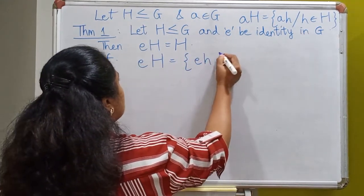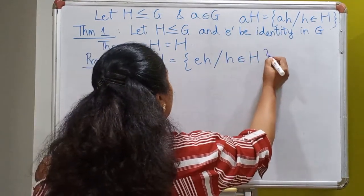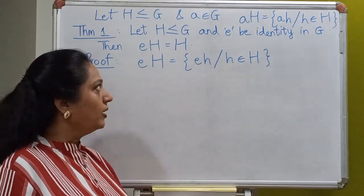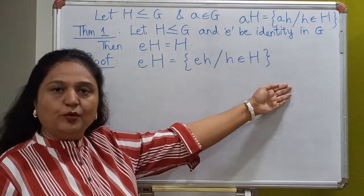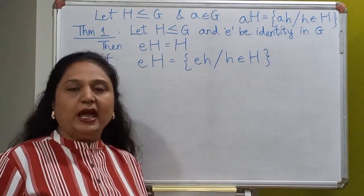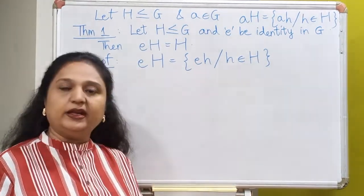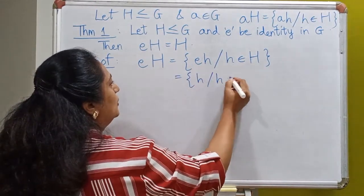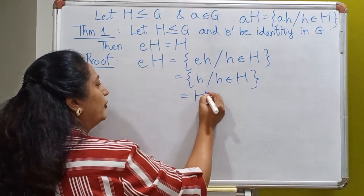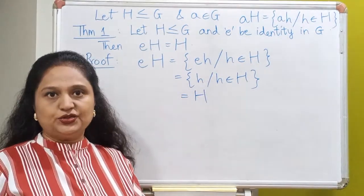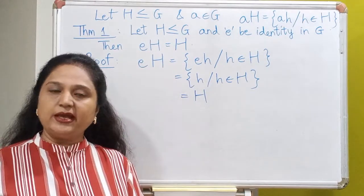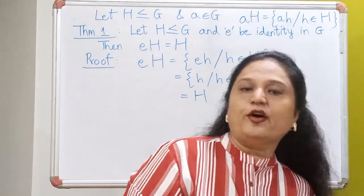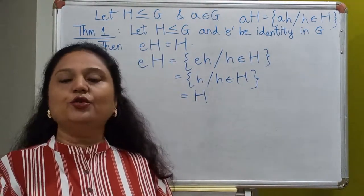Every element in EH looks like a product of two elements where the first element has to be E and the second has to be from H. If we multiply every element of the subgroup from the left by the identity E, and since multiplying with the identity from the left or right gives back the same element, E times H will remain H only, and therefore we get back the elements of H. So the left coset EH is the same as H. Whatever properties I prove for left cosets are also true for right cosets.